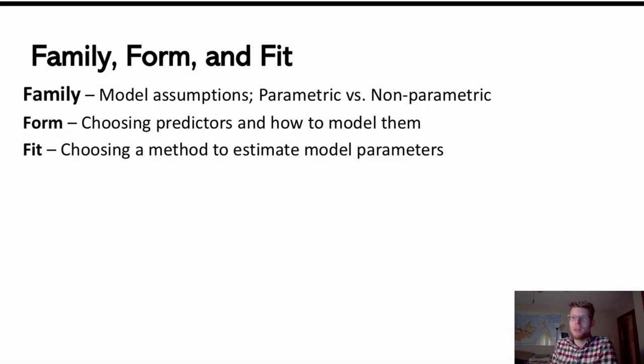The next layer in would be the form of our model. That gets into things like choosing which predictors to include in our model and how to represent them in the model. Are we doing linear terms? Are we doing a quadratic term? Do we have interaction terms? Do we have to do any transformations on our terms? So that gets into issues of form in our model.